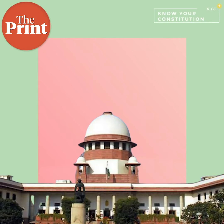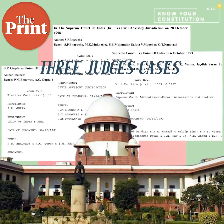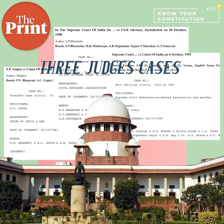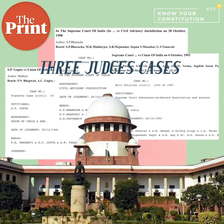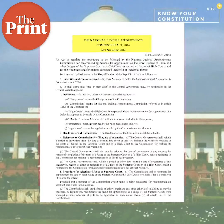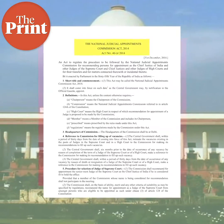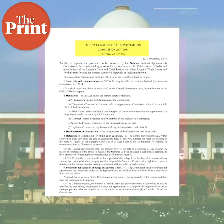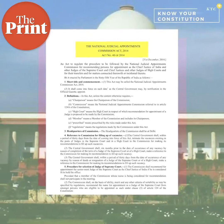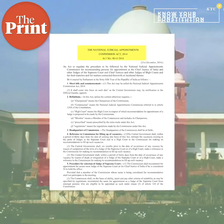The Supreme Court, through what are known as the three judges' cases, interpreted the word 'consultation' to provide the upper hand to the judiciary. It also set up the collegium system comprising the Chief Justice and four senior-most judges. The Centre did try to change this through the National Judicial Appointments Commission in 2014, but the NJAC was declared unconstitutional by the Supreme Court in 2015.